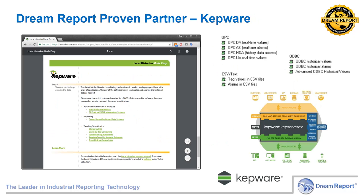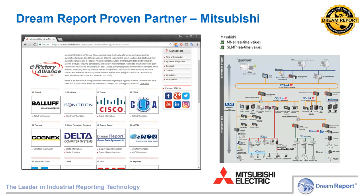Kepware is a proven partner. We've tested Dream Report with KepServer EX, and Dream Report will work with KepServer EX drivers and OPC interfaces for real-time, historian data, as well as their CSV file formats for EFM — electronic flow measurement. Mitsubishi is a proven partner. Working with Mitsubishi Electric, Ocean Data Systems added the SLMP protocol to Dream Report, enabling Dream Report to poll and archive data from virtually all Mitsubishi products. The breadth of Dream Report functionality can then be applied to that real-time and history database. MNET is a protocol for communicating with Mitsubishi HVAC products, and lets Dream Report perform building energy and performance calculations.